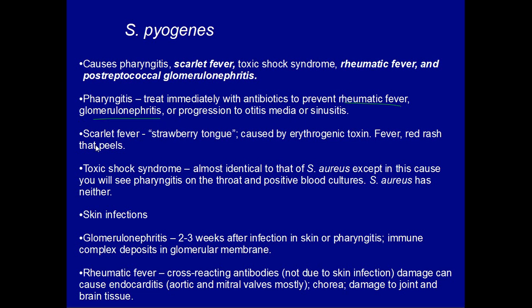Scarlet fever is very unique to streptococcus pyogenes. It has a strawberry tongue and is caused by the erythrogenic toxin. It causes a fever and a red rash that peels — it's almost a less severe form of toxic shock syndrome. This toxic shock syndrome is very similar to that of S. aureus except for two exceptions: first, you can see pharyngitis or skin infections that cause the toxic shock syndrome; and second, positive blood cultures. S. aureus does not have positive blood cultures and you often cannot see the infection.